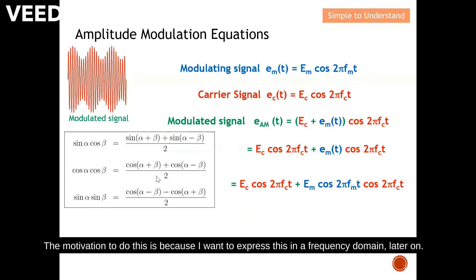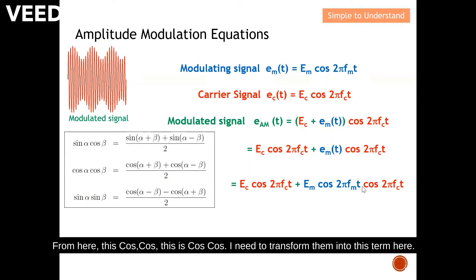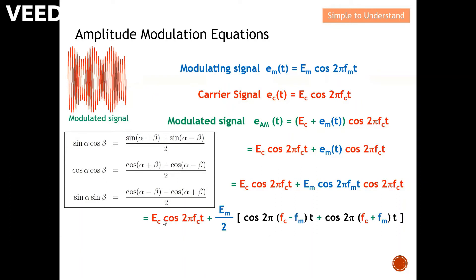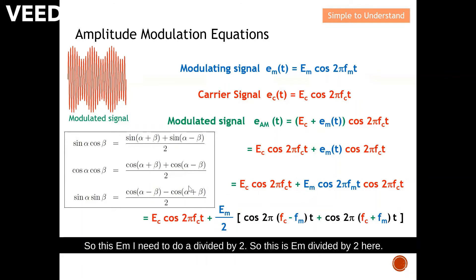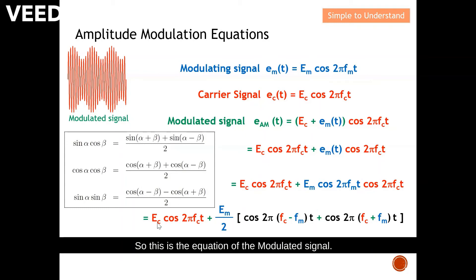The motivation to apply the cosine-cosine trigonometric identity is because I want to express this in the frequency domain. We transform the cosine-cosine product using the identity, dividing em by two. This gives us a term at frequency fc minus fm, and another term at fc plus fm. This is the equation of the modulated signal, and it can now easily be plotted in the frequency domain.